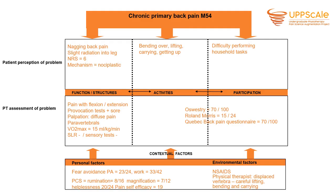After completing the objective examination, we've filled in that her pain mechanism is nociplastic and her pain rating intensity is 70. Her objective examination is mostly negative. Her Oswestry score is 70, her Roland Morris score is 15. On the Fear Avoidance Questionnaire, her physical activity subscore is 23 and her work subscore is 33 out of 42. The Pain Catastrophizing Scale shows 8 on rumination, 7 on magnification, 20 on helplessness. Her Pain Self-Efficacy scale is 19.